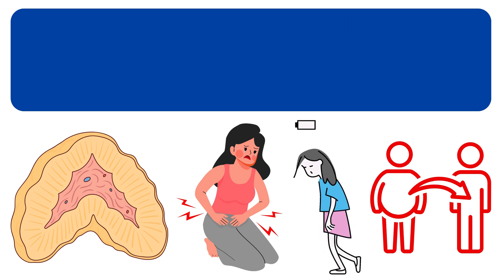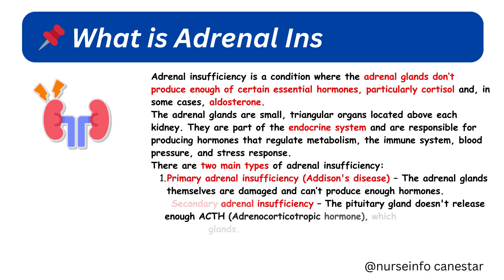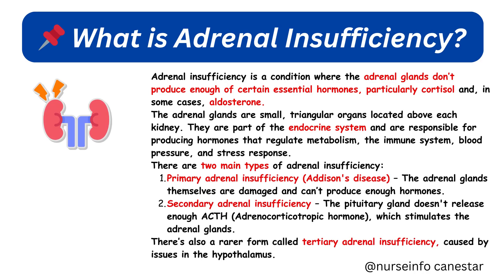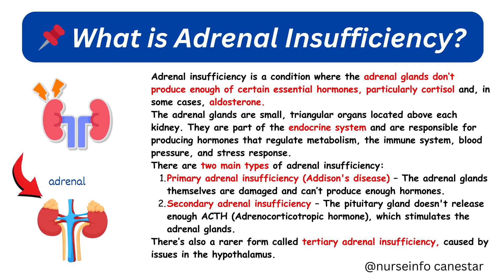Adrenal insufficiency is a condition where the adrenal glands don't produce enough of certain essential hormones, particularly cortisol and, in some cases, aldosterone. The adrenal glands are small, triangular organs located above each kidney. They are part of the endocrine system and are responsible for producing hormones that regulate metabolism, the immune system, blood pressure, and stress response.